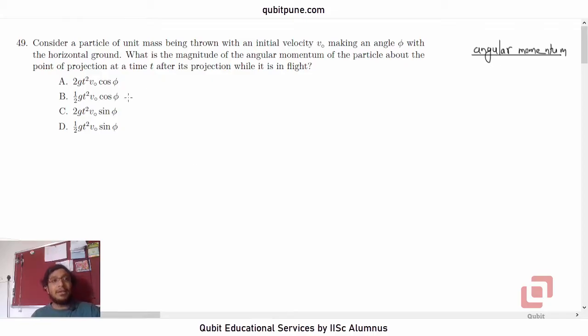Let's read the statement. Consider a particle of unit mass being thrown with an initial velocity v0 making an angle phi with the horizontal ground. What is the magnitude of the angular momentum of the particle about the point of projection at a time t after its projection while it is in flight?